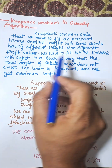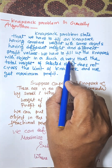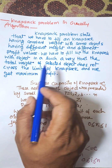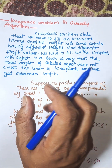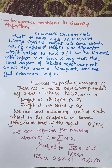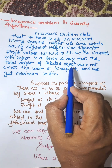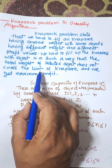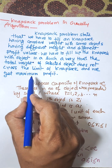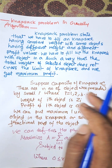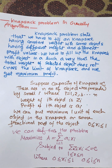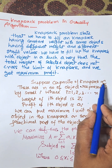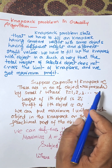We have to fill up the knapsack with objects in such a way that the total weight of the selected objects does not cross the limit of the knapsack, and we get maximum profit. Suppose the capacity of the knapsack is C and there are n number of objects.